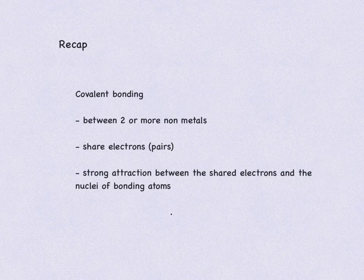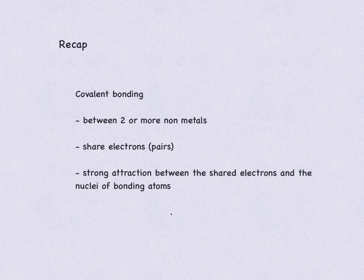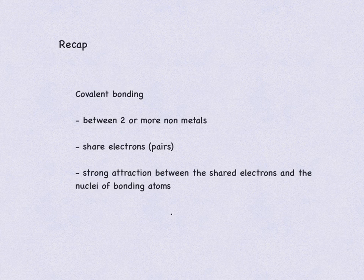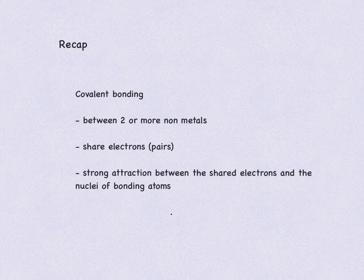Just to recap: covalent bonding is between two or more non-metals. This is a sharing of electrons — you have a pair of electrons in a covalent bond. The covalent bond is a strong attraction between the shared electrons and the nuclei of bonding atoms. That's the end of the lesson — I'll see you soon. Bye for now.